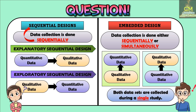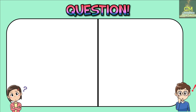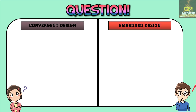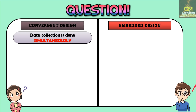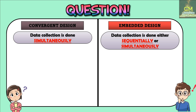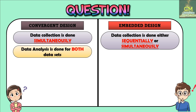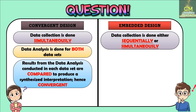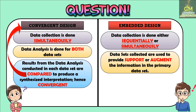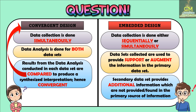It should also be noted that in an embedded design, both datasets are collected during a single study. Now, let's compare the convergent design to the embedded design. In a convergent design, data collection is done simultaneously, whereas in an embedded design, it is done either sequentially or simultaneously. In a convergent design, the data analysis is done for both datasets and the results are compared to produce a synthesized interpretation — hence the term convergent. Whereas in an embedded design, the secondary dataset is used to support or augment the primary dataset, providing additional information not found in the primary source.